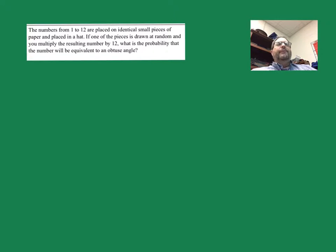Got another interesting problem here. This one says the numbers from 1 to 12 are placed on identical small pieces of paper and placed in a hat. If one piece is drawn out at random and you multiply the resulting number by 12, what's the probability that the number will be equivalent to an obtuse angle?